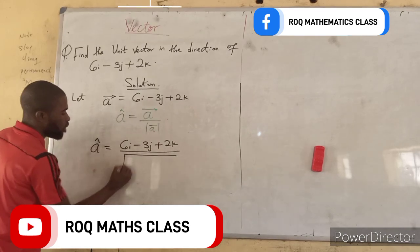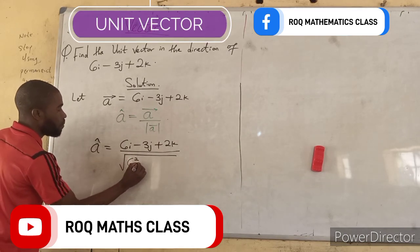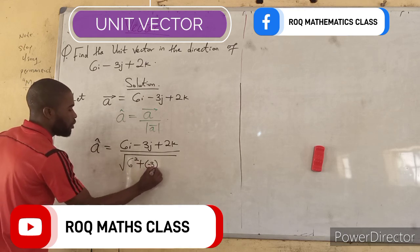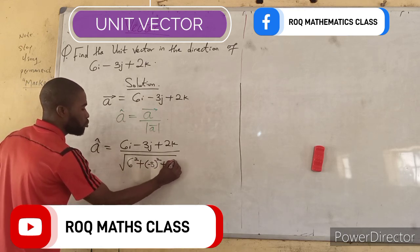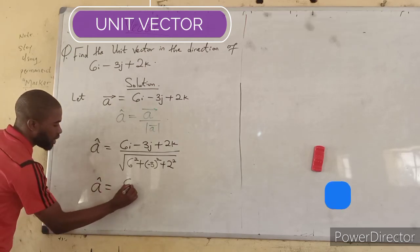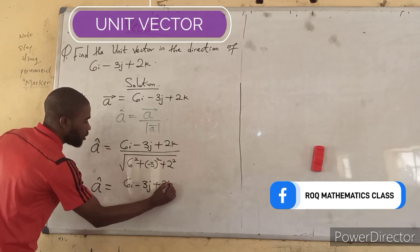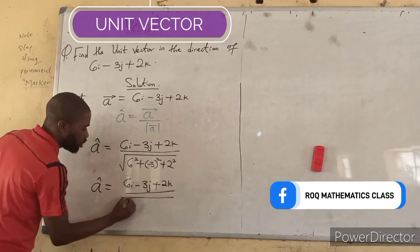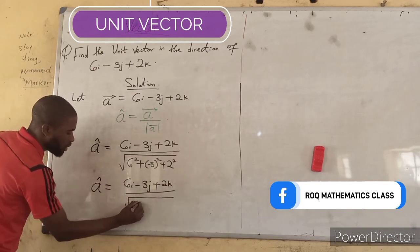Modulus of vector a is square root of 6 square plus minus 3 square plus 2 square. So, unit vector a is 6i minus 3j plus 2k divided by square root of 6 square, 36.